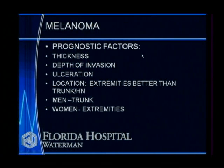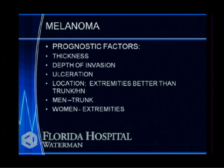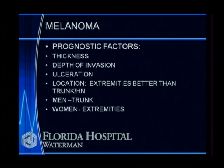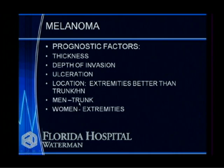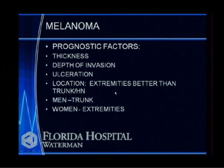Prognostic factors for melanoma include thickness — the thicker it is, the more aggressive. How deeply it invades determines the stage and increases the risk for spread. Whether it's ulcerated is a very adverse prognostic factor. Melanomas found on the extremities have a better prognosis than those on the trunk — chest or back. Men with trunk melanomas have a worse prognosis. Women more commonly have it on their extremities and tend to do better with this disease than men.